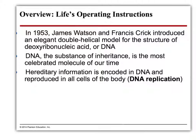Morgan did his experiments with the drosophila and figured out where genes are on a chromosome, and that chromosomes are actually transferred from one generation to the next. But up until then, we still didn't know what the genetic material was. You've learned since fifth grade that the genetic material in humans and eukaryotic cells is DNA. But how did we get to that point?